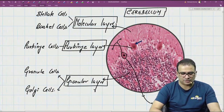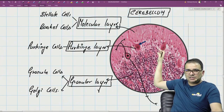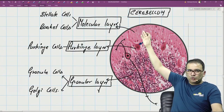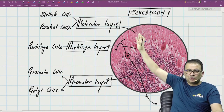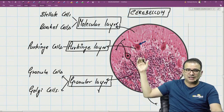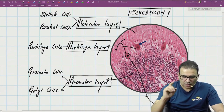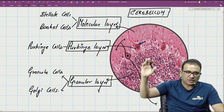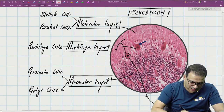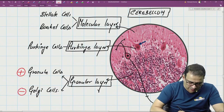So across the three layers of the cerebellar cortex — molecular, Purkinje, and granular — we have a total of five types of cells. The molecular layer has stellate and basket cells as supporting cells, the Purkinje layer has Purkinje cells, and the granular layer has granule and Golgi cells. Importantly, out of all five cell types, only granule cells are excitatory in nature; the rest are all inhibitory.